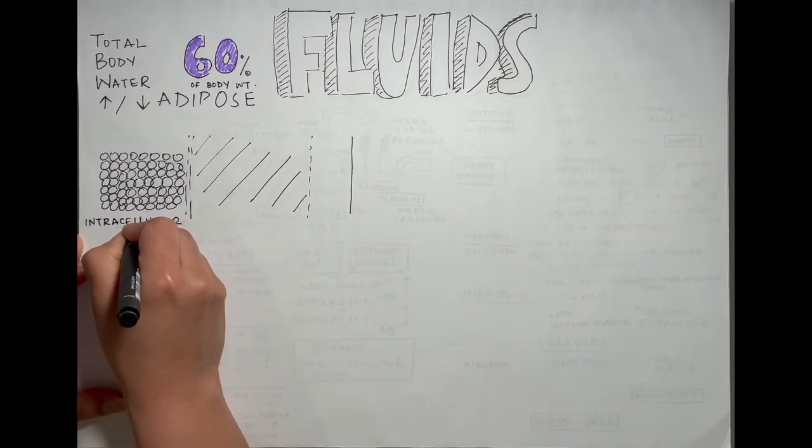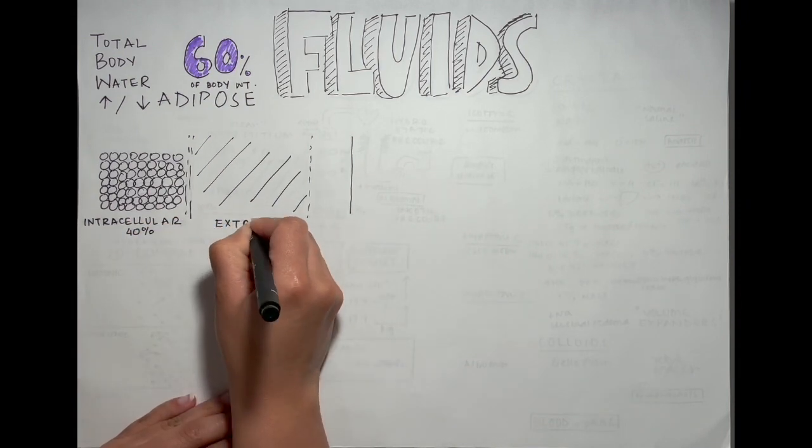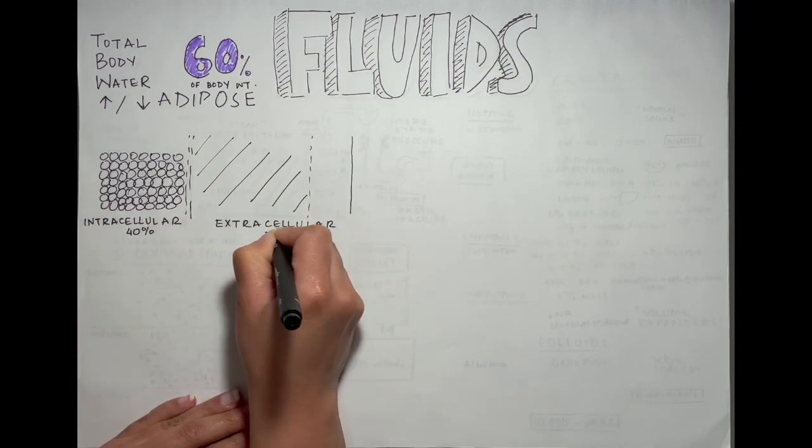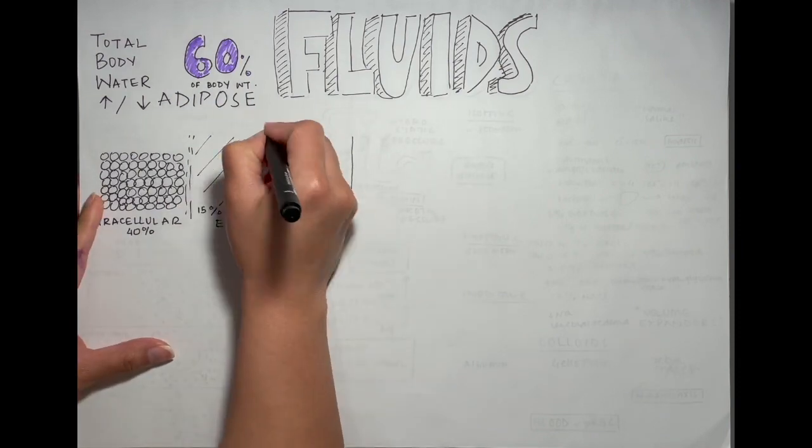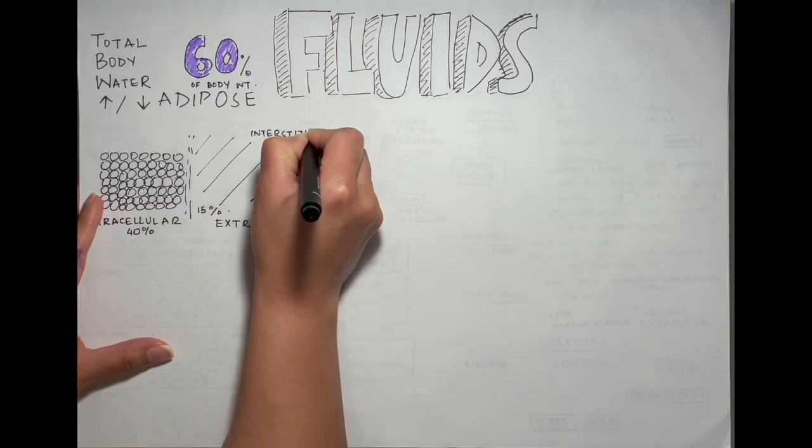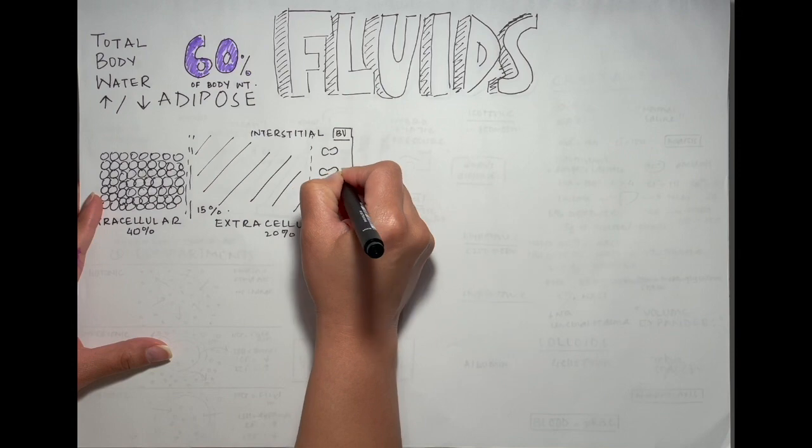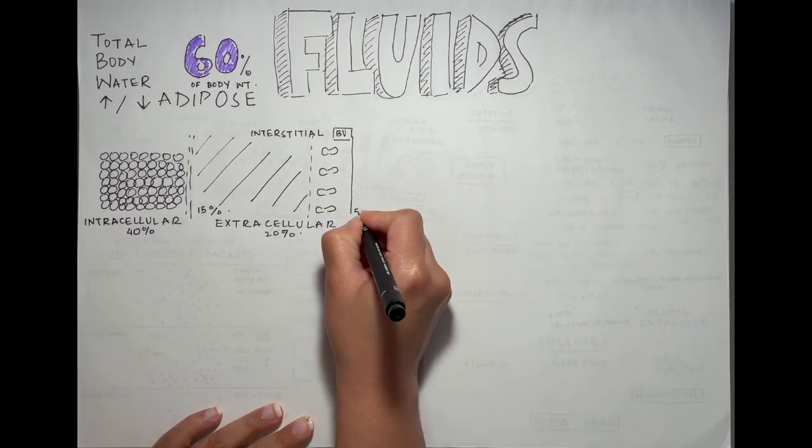The remainder of the 20% forms the extracellular fluid. Some of it, that we know as blood, makes up 5%, whereas the rest surrounds those cells and keeps them hydrated, and that's 15% in the interstitium. Remember that blood is also a kind of interstitium because it contains red blood cells and white blood cells.